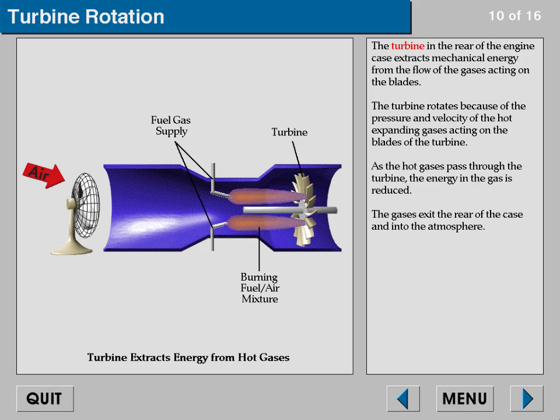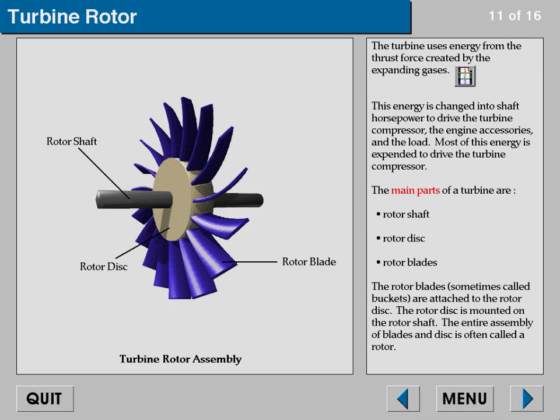As the hot gases pass through the turbine, the energy in the gas is reduced. The gases exit the rear of the case and into the atmosphere. The turbine uses energy from the thrust force created by the expanding gases; this energy is changed into shaft horsepower to drive the turbine compressor, the engine accessories, and the load.